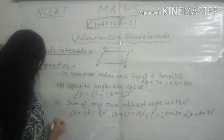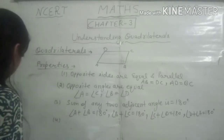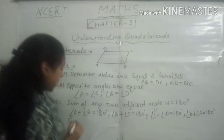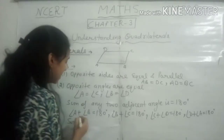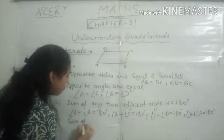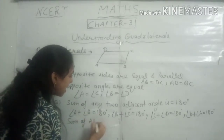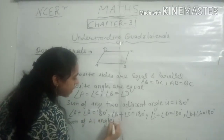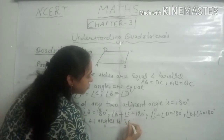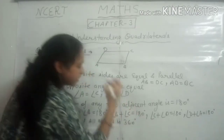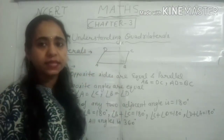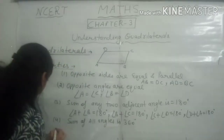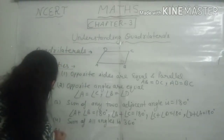Property number four is the angle sum property: the sum of all angles of a quadrilateral is 360 degrees.